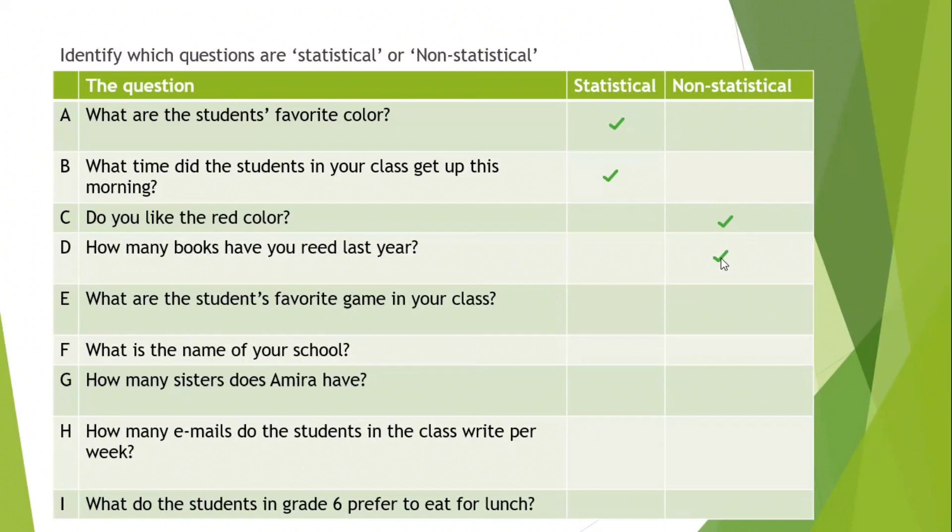E, what are the students' favorite game in your class? So I have to ask one by one, what's your favorite game? Each student will say his favorite game. So this is statistical. F, what is the name of your school? This is a direct question. You will say my school name is and say the name of the school. This is non-statistical.